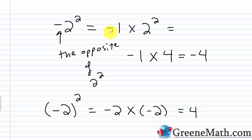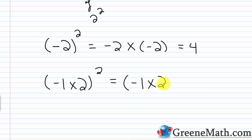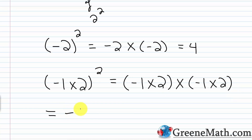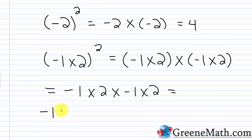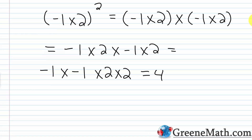You might ask: what if I used the negative 1 trick here? It still works. If I did negative 1 times 2, enclosed in parentheses, squared, I'd have negative 1 times 2 multiplied by negative 1 times 2. Since it's all multiplication, I can write this as negative 1 times 2 times negative 1 times 2. The commutative property lets me reorder: negative 1 times negative 1 times 2 times 2. Negative 1 times negative 1 is positive 1; times 2 is 2; times 2 is 4. Our mistake was just with the notation.